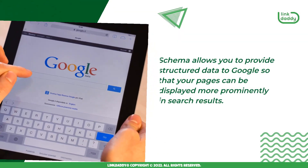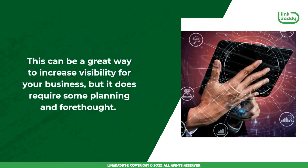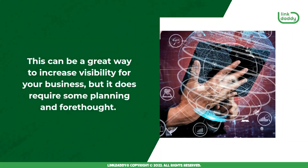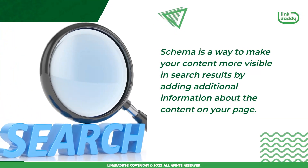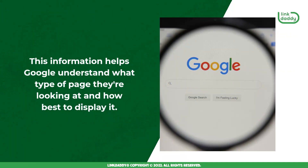Schema allows you to provide structured data to Google so that your pages can be displayed more prominently in search results. This can be a great way to increase visibility for your business, but it does require some planning and forethought. Schema is a way to make your content more visible in search results by adding additional information about the content on your page. This information helps Google understand what type of page they're looking at and how best to display it.